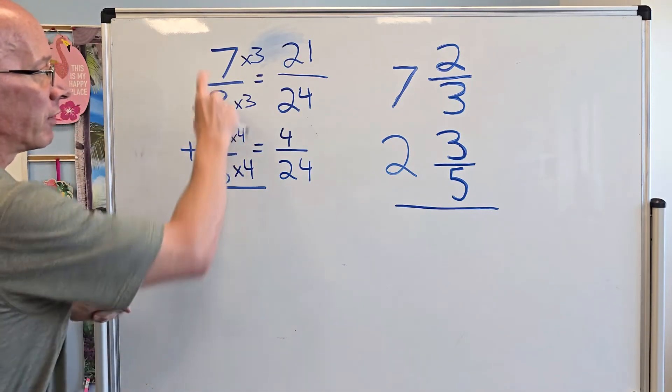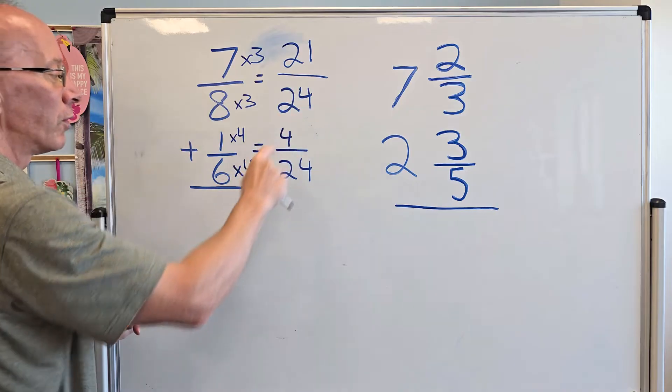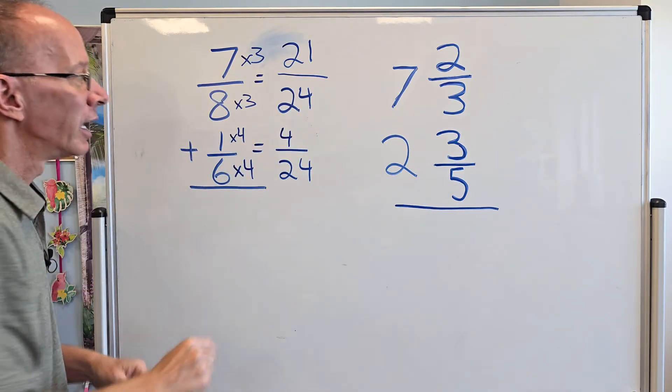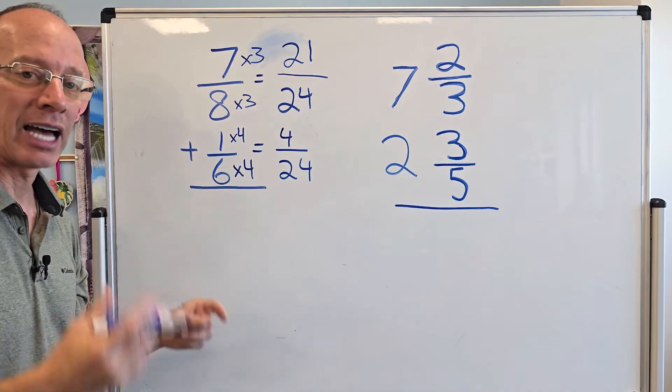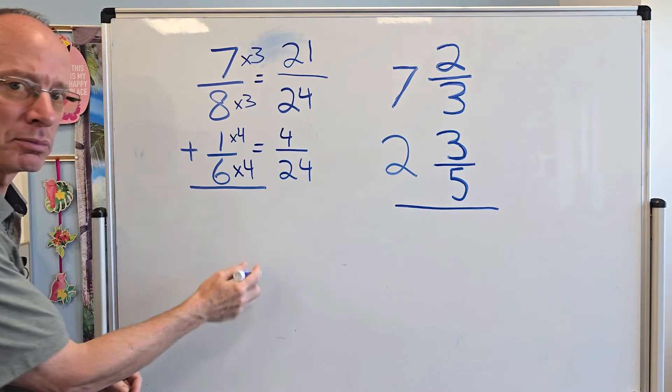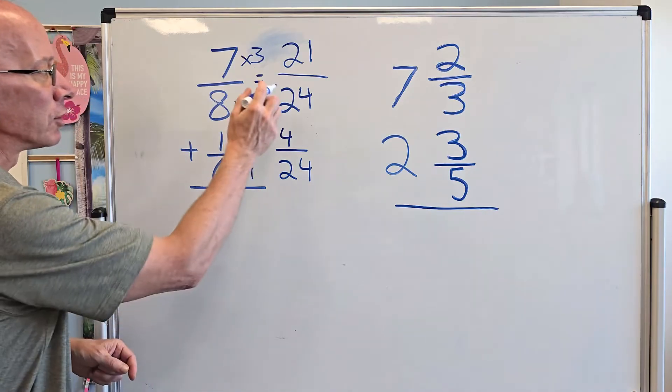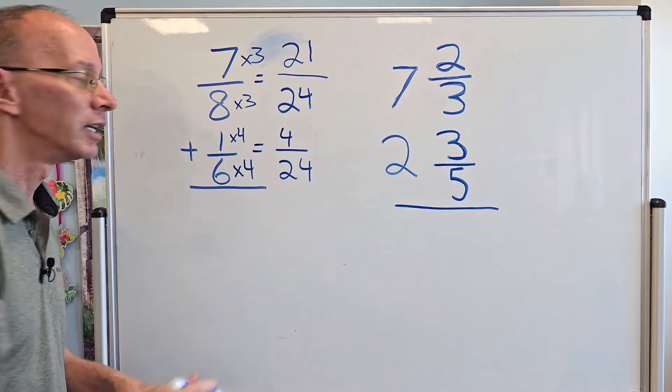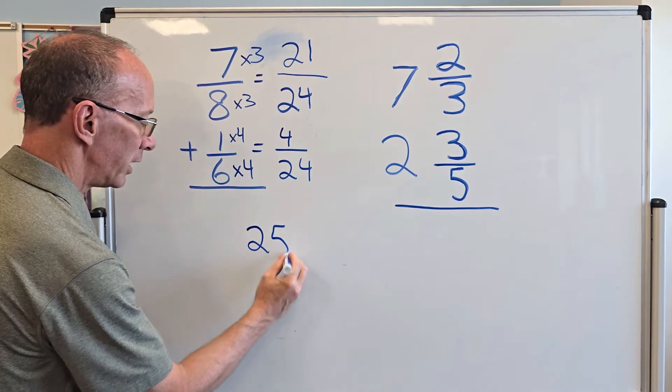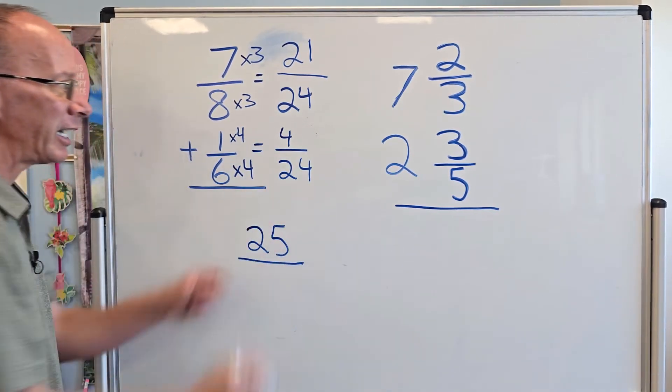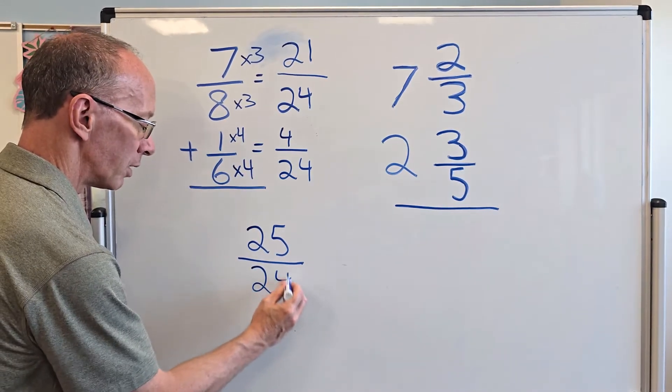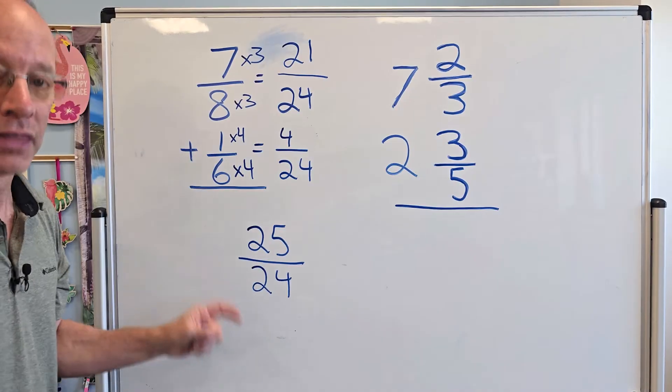So those are my new fractions I'm going to be working with. Now, I did not change the value. 7 eighths equals 21 twenty-fourths and 1 sixth equals 4 twenty-fourths. Now, all I have to do is add the numerators and keep the denominator the same. So 21 plus 4 equals, you got it, 25. So I'm going to put 25 right here. And I keep the denominators the same, which would be 24.